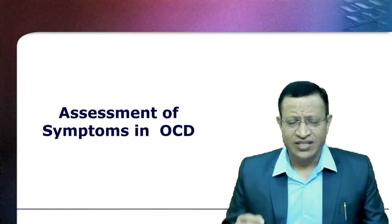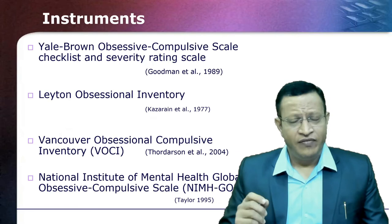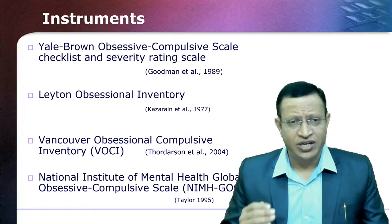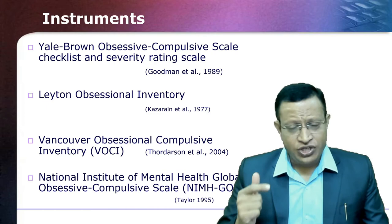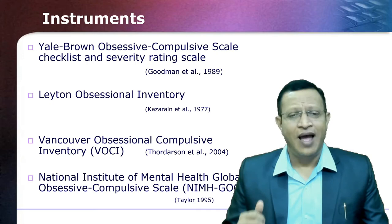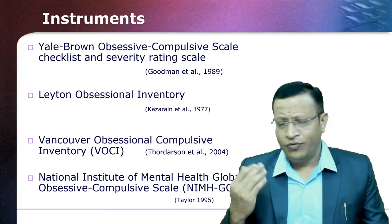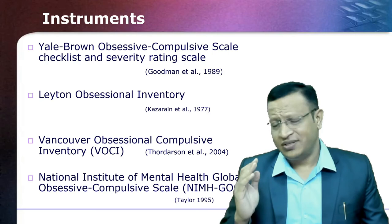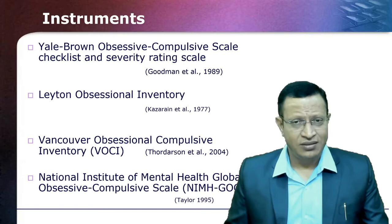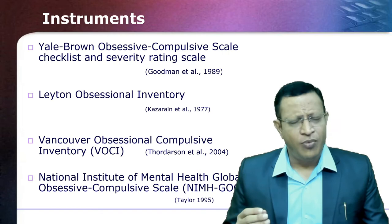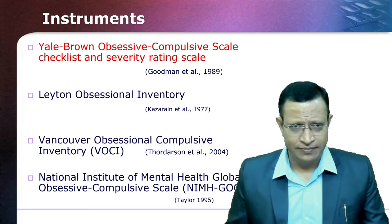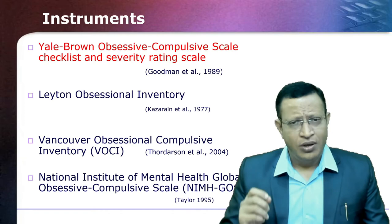Moving to the assessment of symptoms in OCD — that is, obsessions and compulsions. The instruments commonly used to assess obsessions and compulsions are the Elbron OCD Scale, Leyton Obsessional Inventory Scale, Vancouver OC Inventory Scale, and the National Institute of Mental Health Global Obsessive Compulsive Scale. However, across the world Y-BOCS is very famous, used across various pharmacological and CBT research. Y-BOCS is free, hence we use Y-BOCS even in NIMHANS OCD Clinic. Today I will be discussing about the Y-BOCS — that is, the Elbron Obsessive Compulsive Checklist and Severity Rating Scale.